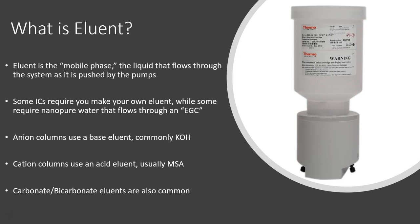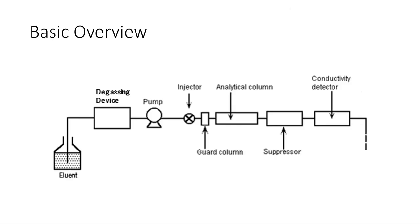Anion columns use a base eluent which is usually potassium hydroxide, and cation columns use an acid eluent which is usually methane sulfonic acid. You may hear the term carb-bicarb systems—that's because carbonate and bicarbonate eluents are also very common with IC. Back to this image, we see that our eluent is pushed through the system by the pumps. It goes through a degassing device which removes gas because we don't want any air bubbles getting into our system.